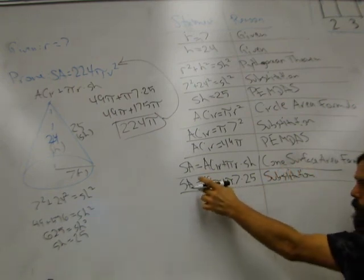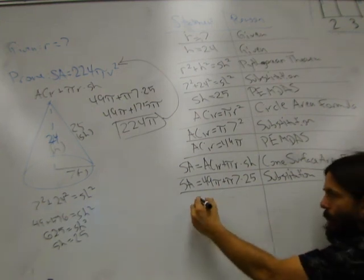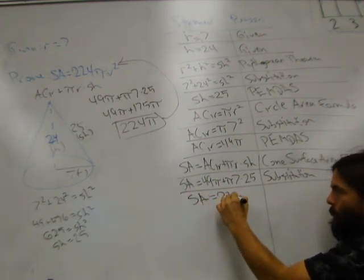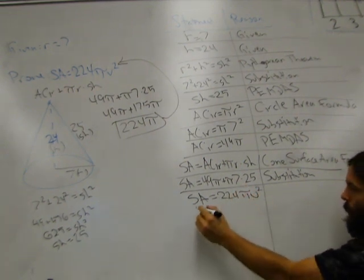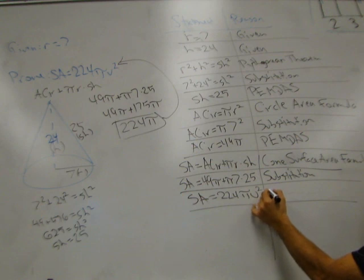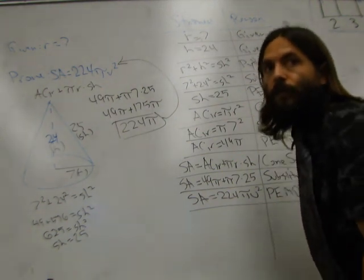All right. We do our math. You do the seven times 25, you get 175 pi. You add it together. You finish with the surface area. It equals 224 pi units squared. That's our math. What do we call that? End of math. That's it. There's your proof.